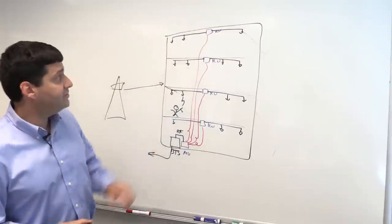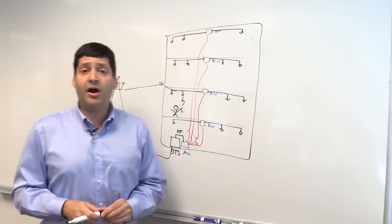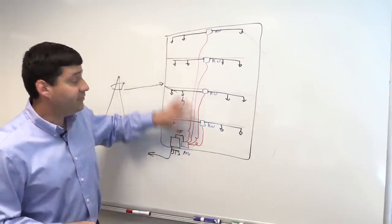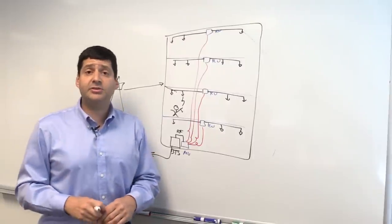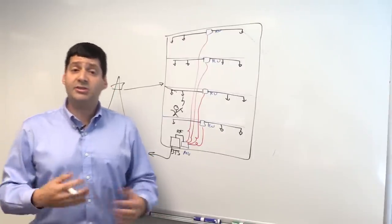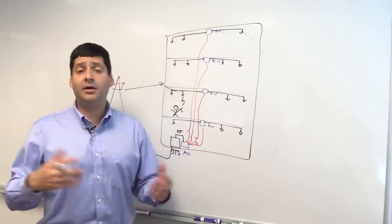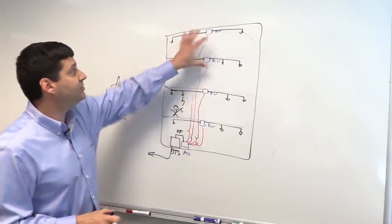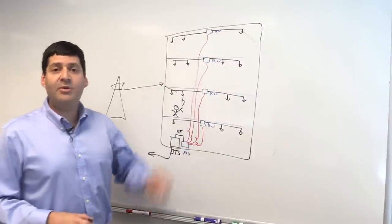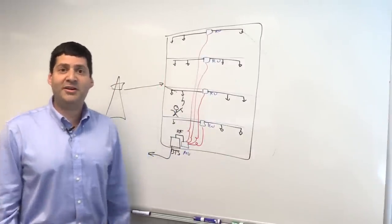And that's one basic DAS architecture. There are other DAS architectures which use different types of fiber and other DAS architectures that use different types of media like 75 ohm cable or like twisted pair cabling to move these things around. But in general, that's how a DAS works. I'm Morgan Kirk, CommScope.